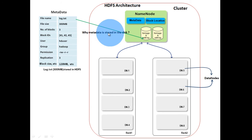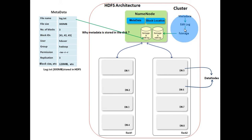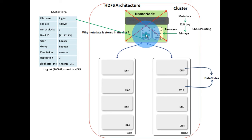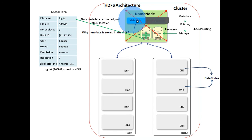Why is metadata stored on disk? Metadata is first stored persistently in edit log and then converted to FS image. We will not worry about FS image and edit log details — that will be explained during checkpointing. For now, keep in mind that it is used for recovery purposes. If the name node crashes, the whole data in main memory is lost. This is where metadata stored on disk comes to the rescue. Name node is recovered using this metadata. Keep in mind that only metadata is recovered; block location is not recovered using this process.